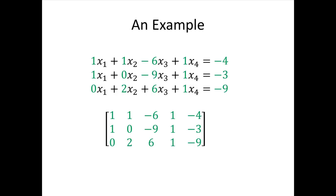Each coefficient in the linear system corresponds to one of the entries in the matrix. Because we have three equations, our matrix has three rows. Because we have four variables, our matrix has five columns — one for each variable. The first column corresponds to x1, the second to x2, and so on. The fifth column represents the numbers on the other side of the equals sign — sometimes called the augmented column — which is why we have one more column than variables.